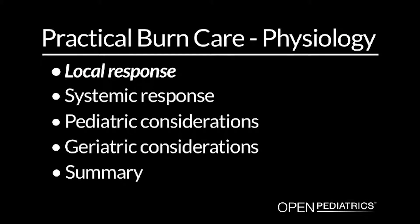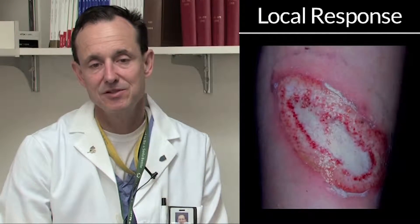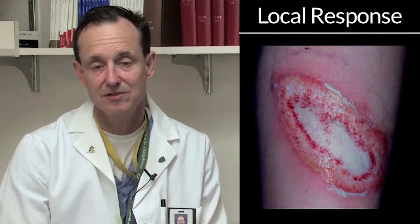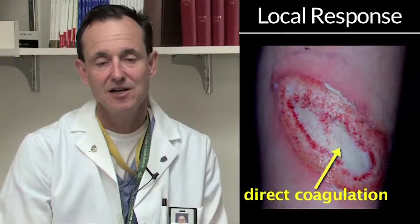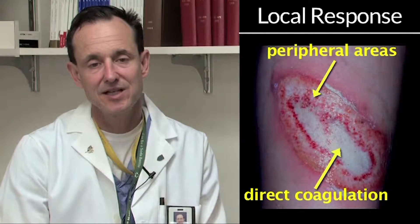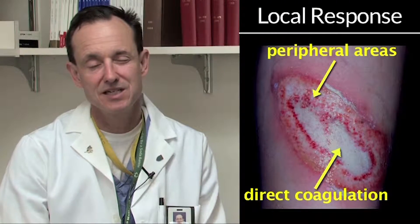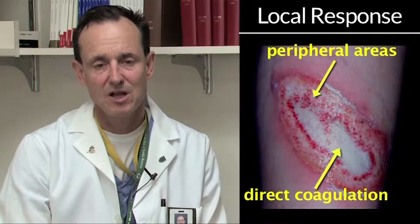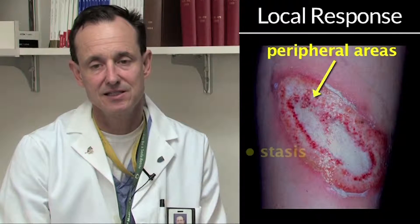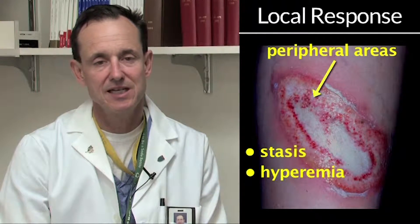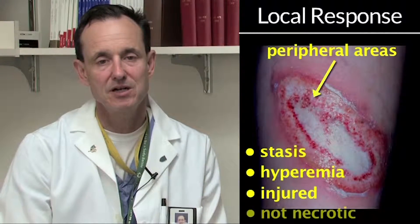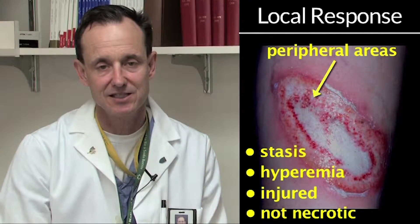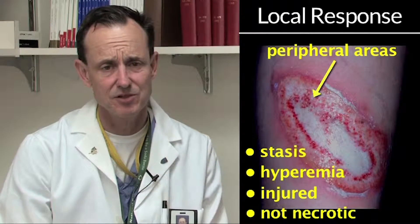Local response. We'll talk briefly about the local response to burn injury. Thermal energy causes direct coagulation of the tissue, but there's a peripheral area where there's damage that potentially is reversible. A lot gets made of this zone of stasis and hyperemia, where there are potentially salvageable areas of injured but not necrotic skin, and there may be something to this.